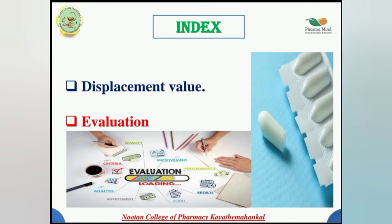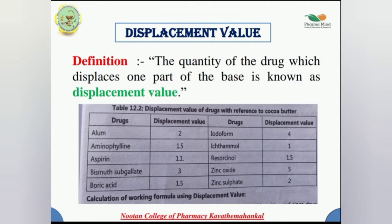We will discuss in step by step. The definition of displacement value: the quantity of the drug which displaces one part of the base is known as the displacement value. A number of dosage forms such as suppositories, lozenges, and tablet capsules are prepared by molding. These dosage forms are formulated on a weight basis, but mold filling is based on the capacity of the cavity. Although the volume of the base remains the same, the weight of the suppository varies with the type of base due to the presence of drugs according to specific gravity.